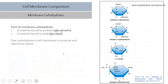Carbohydrates in cell membranes are not found in free form but are bound either to proteins — forming glycoproteins — or covalently bound to lipids — forming glycolipids. The function of carbohydrates in the membrane is not as significant as that of lipids and proteins.